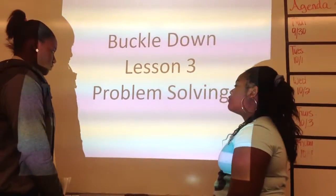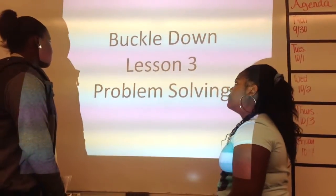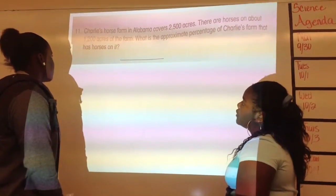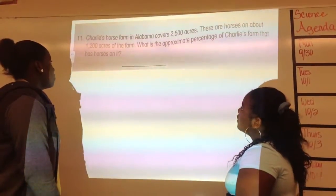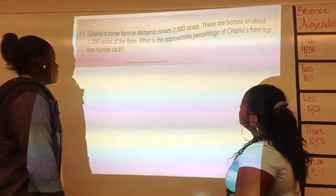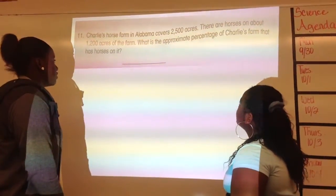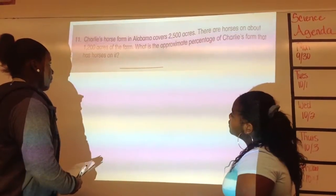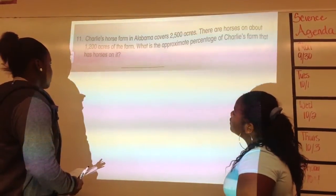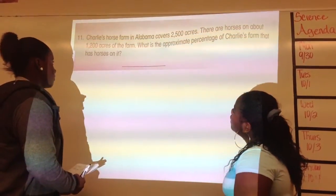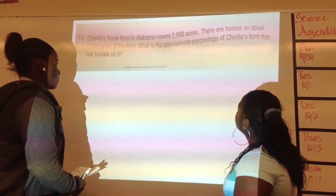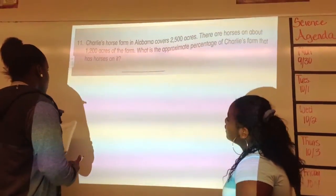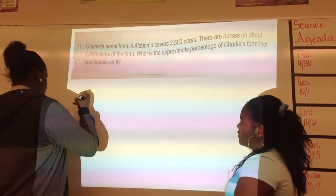I'm working on Block of Dialysis 3 Problems Island. Number 11 says: Charlie's Horse Farm in Alabama covers 2,500 acres. There are horses on about 1,200 acres on the farm. What is the approximate percentage of Charlie's farm that has horses on it?